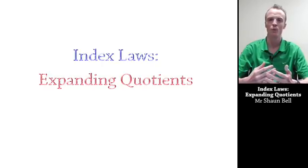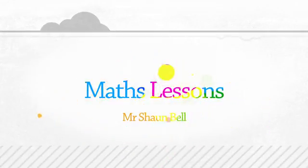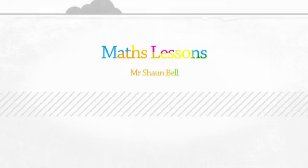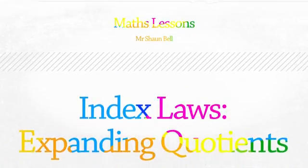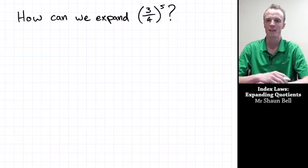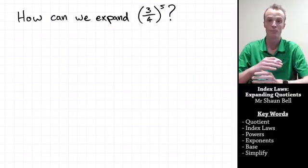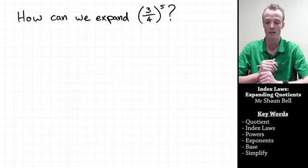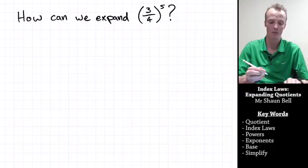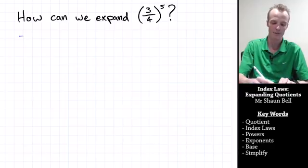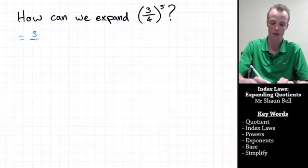Today we're going to explore how we expand quotients that have been raised to a power. Let's begin by taking a look at how we can expand a quotient such as 3 over 4 that's been raised to the power of 5. When something's to the power of 5, it means it is that value times itself 5 times. So it's going to be 3 over 4 times itself 5 times.